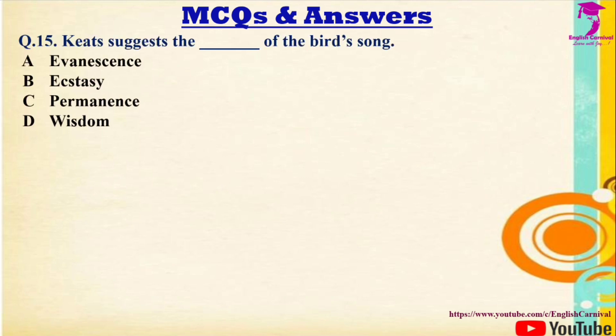Question 15: Keats suggests the — of the bird's song. Options: A) Event Sense, B) Ecstasy, C) Permanence, D) Wisdom. The correct answer is C — Permanence.